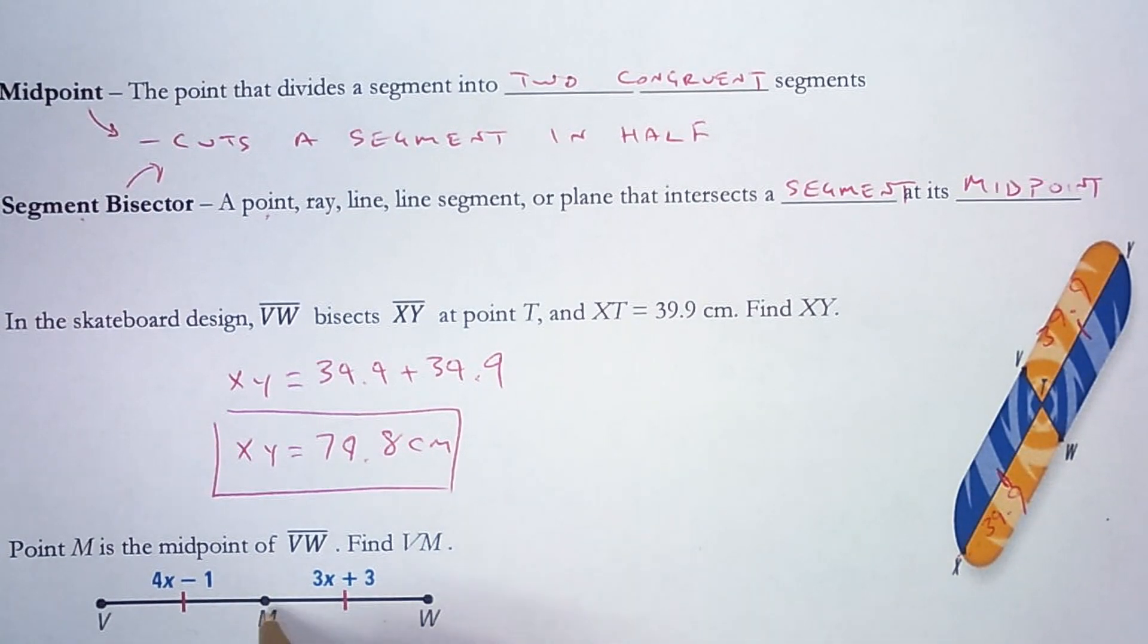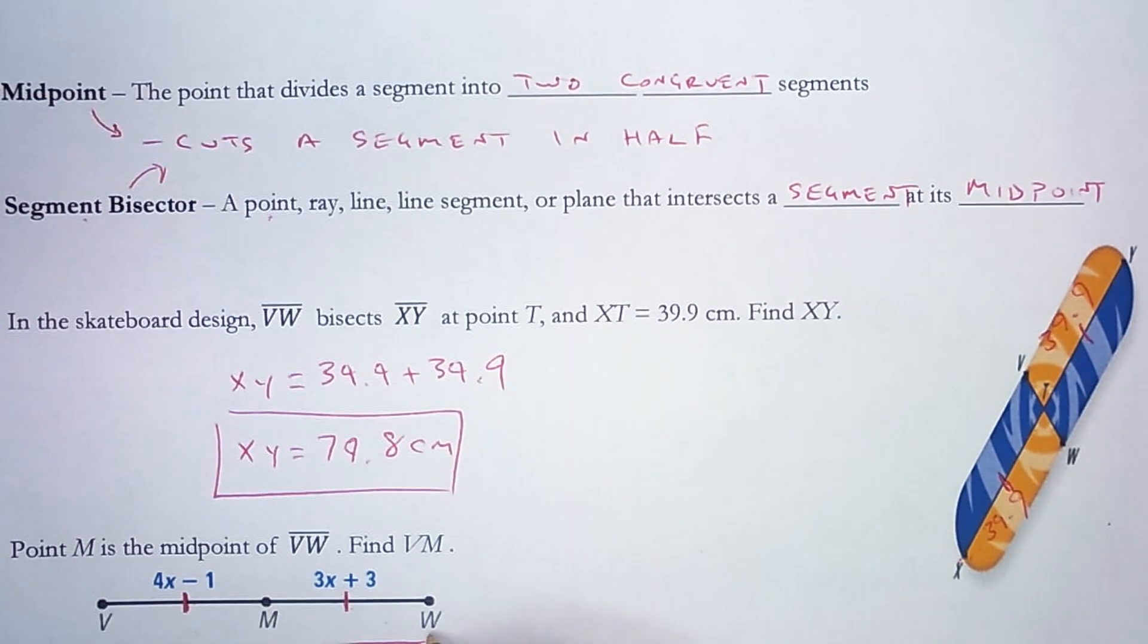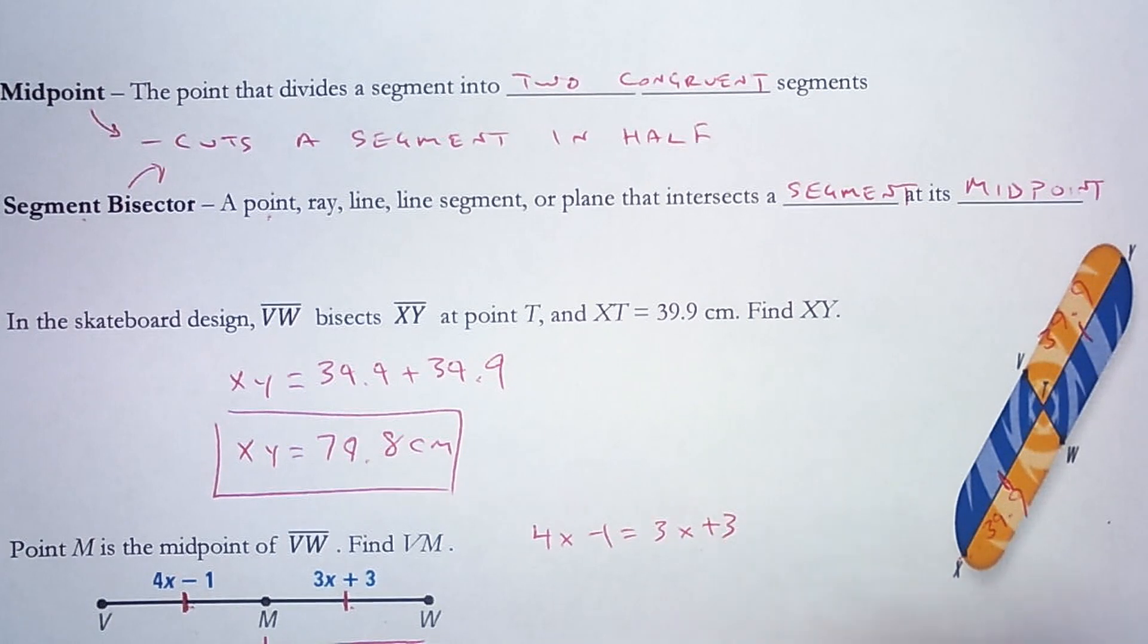Point M is the midpoint. So that means these two sides are congruent. That's why it has tick marks. Find the length of VM. So from here to here. Since these have the same length, I can set the expressions equal to each other. 4x minus 1 is equal to 3x plus 3.